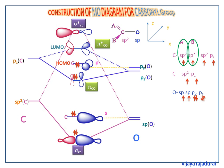This is the overall molecular orbital diagram for the carbonyl group.